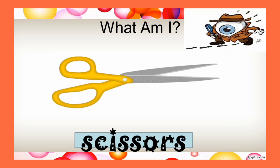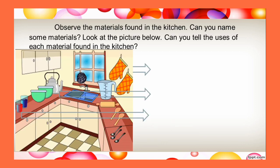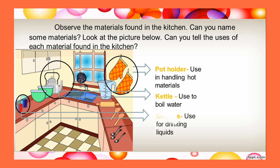What do the materials you showed have? Now, I want you to observe the materials found in the kitchen. Can you name some materials? Look at the picture below. Can you tell the uses of each material found in the kitchen? This one is a potholder, used for handling hot materials. This one is a kettle — it is used to boil water. And these are glasses, used for drinking liquids.